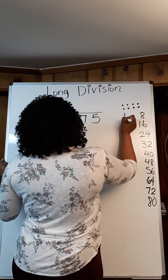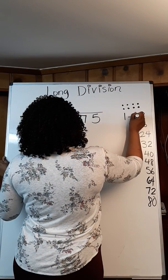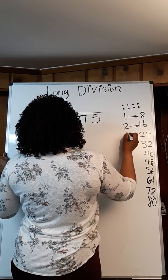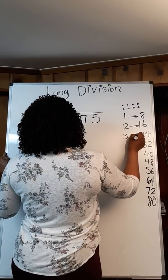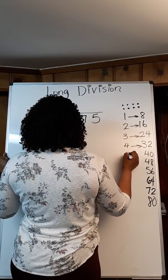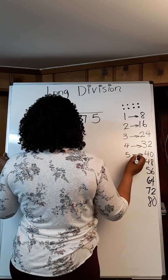I'm going to put one, which represents one group of 8 equals 8. Two equals 16. Three is 24. Four is 32. Five groups of 8 is 40.